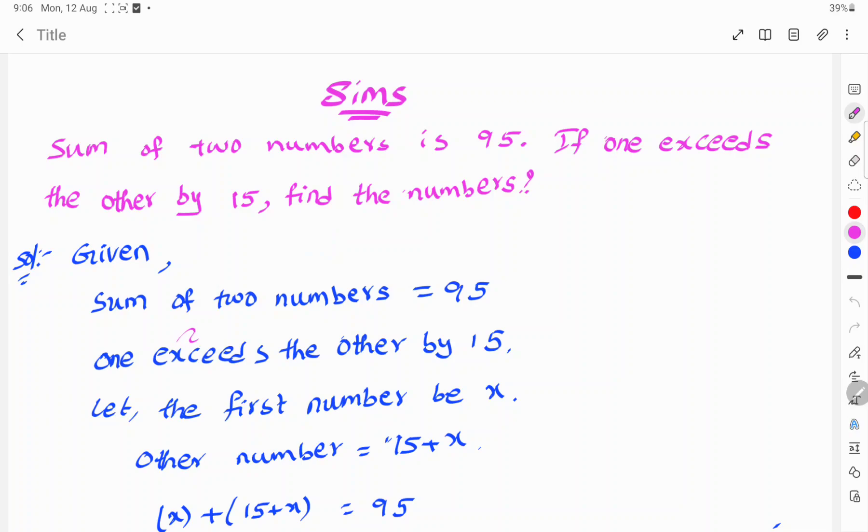Let's see the solution. Given that sum of two numbers is 95 and one exceeds the other by 15, find the numbers.